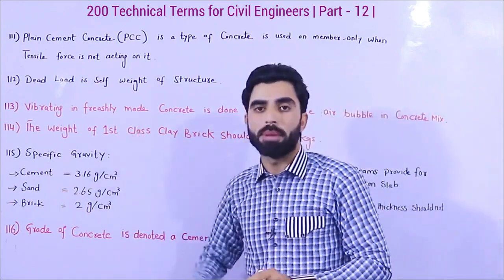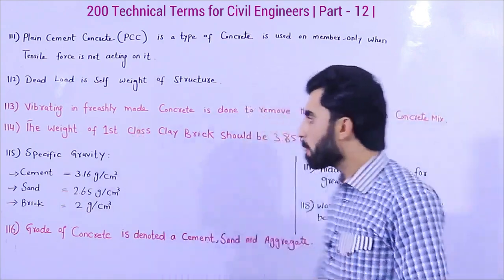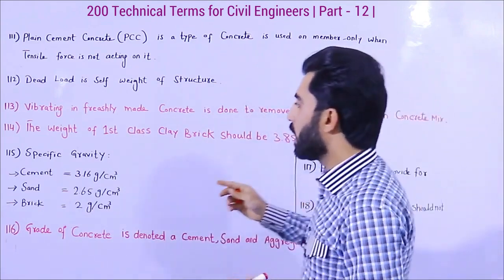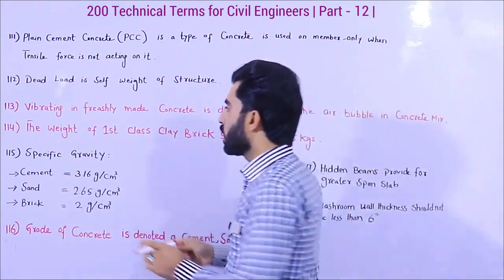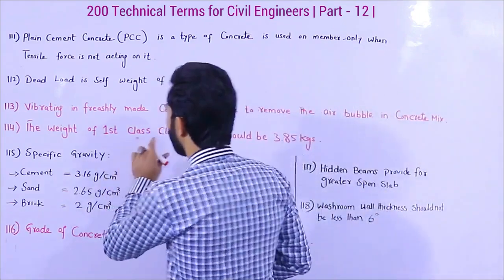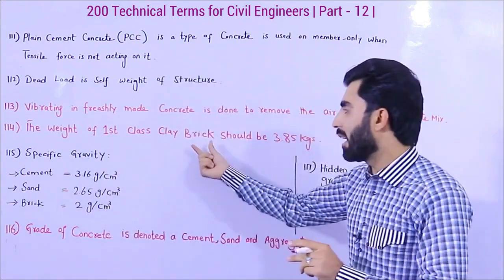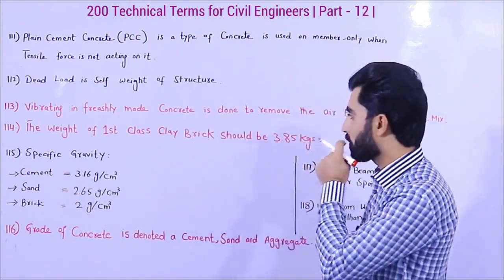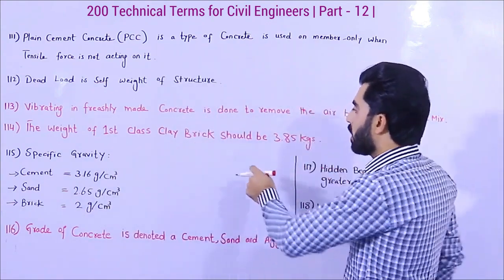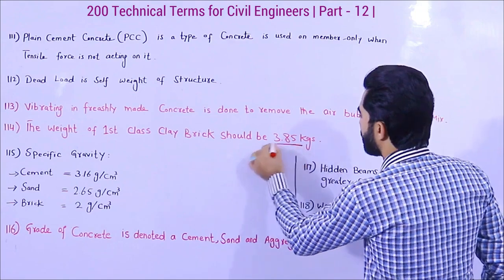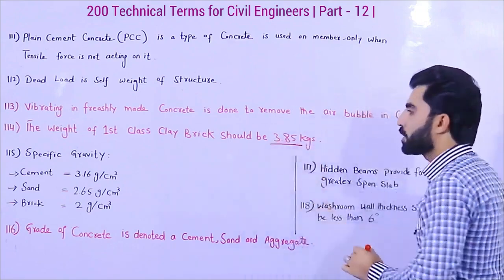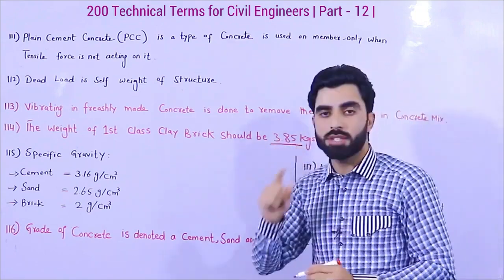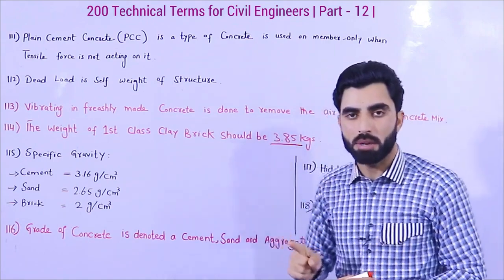Term number 114 is about the weight of a first-class clay brick. The weight of a first-class clay brick is 3.85 kg — it should not be less than 3.85 kg.